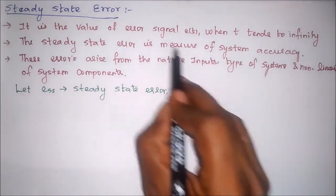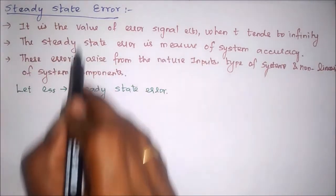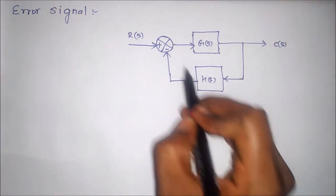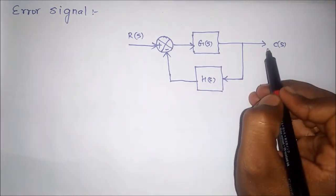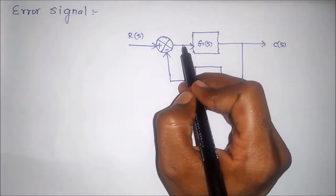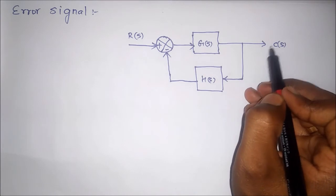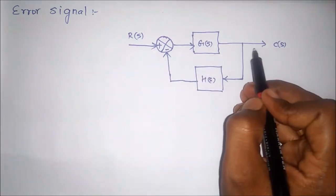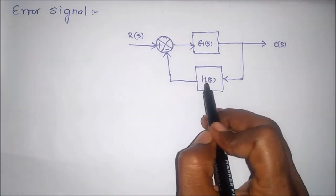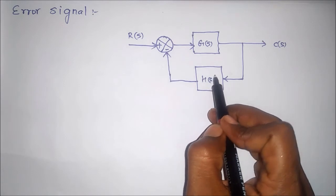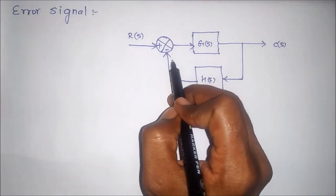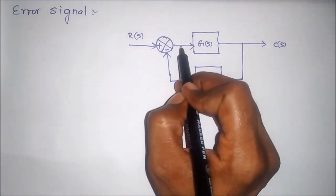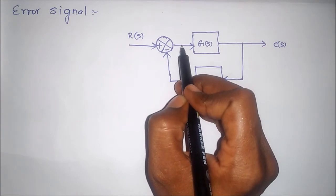Suppose this is the closed loop system with feedback. At steady state, error equals zero — it means at steady state, output is directly proportional to reference input alone. We see that at steady state, C(s) will come after multiplying with the feedback gain; the value will equal zero when the output is at steady state. So at that time, error equals zero.